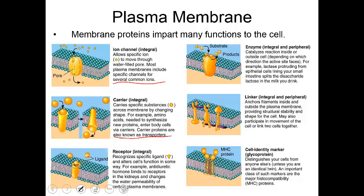The third type of protein, also a transmembrane protein, is a receptor protein. When you think about the term receptor, it means that it is going to receive something. A receptor protein could be a specific ligand that receives a molecule of some kind. When the receptor protein and this molecule bind, they're going to alter the function of the cell in some way, creating a metabolic change.